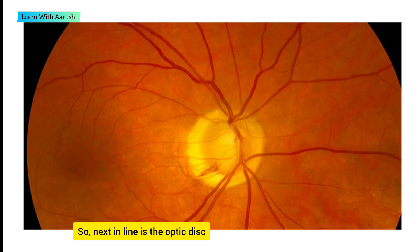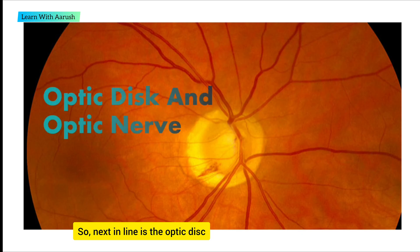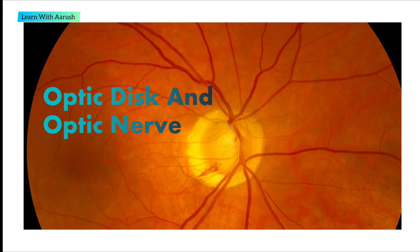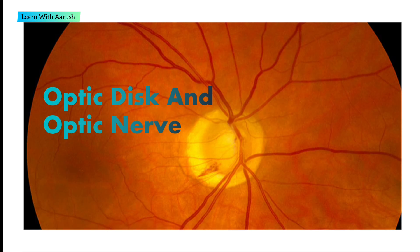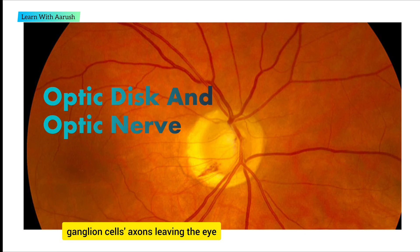Next in line is the optic disc and the optic nerve. The optic disc or optic nerve head is a point of exit for ganglion cells leaving the eye.